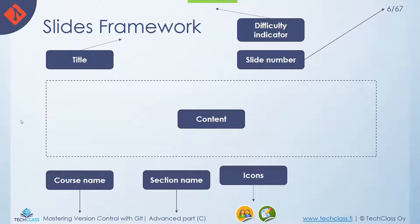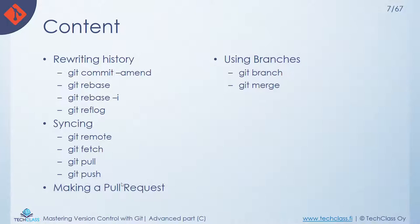Here is the slides framework where you can see the title, difficulty level indicator, page numbers, content icons, course name, and section. The content of this part covers: git commit --amend, git rebase, git reflog, git remote, git fetch, git pull, git push, how to make a pull request, and for using branches — git branch and git merge.